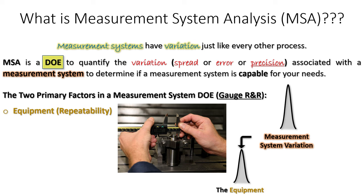The first factor is the equipment itself. Every piece of equipment — calipers, micrometers, weigh scales, CMMs — has some level of inherent variation. When we do our gauge R&R, part of that study is to quantify how much variation is specifically attributable directly to the piece of equipment.